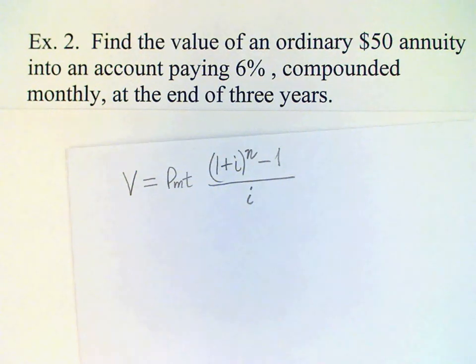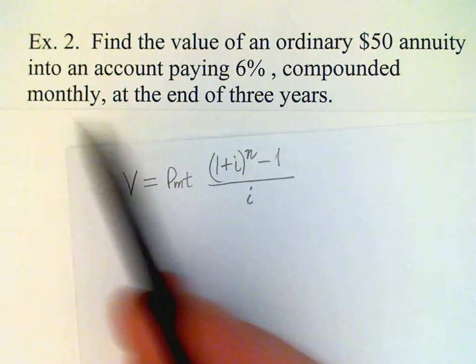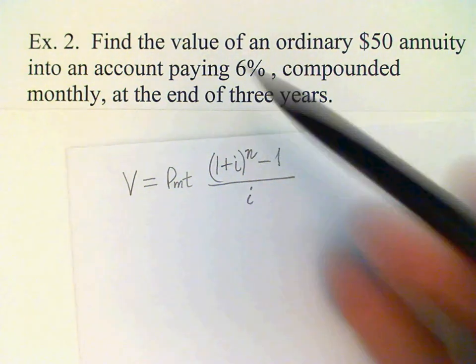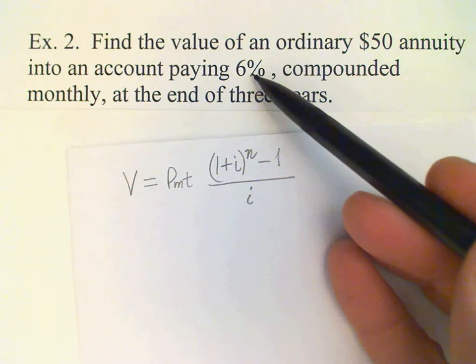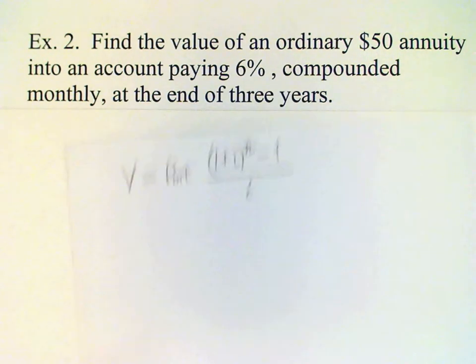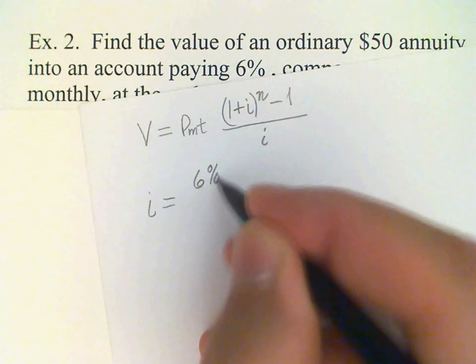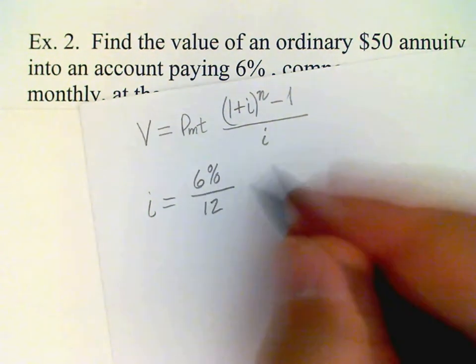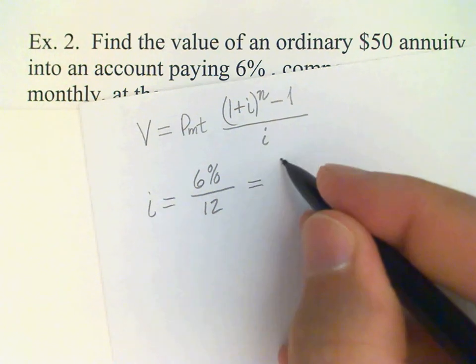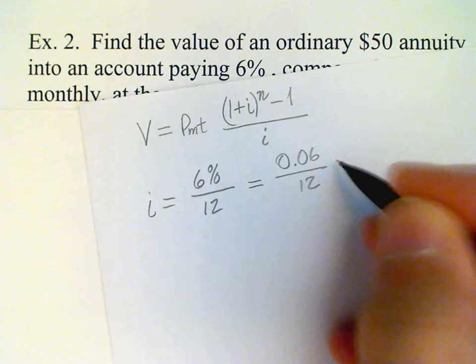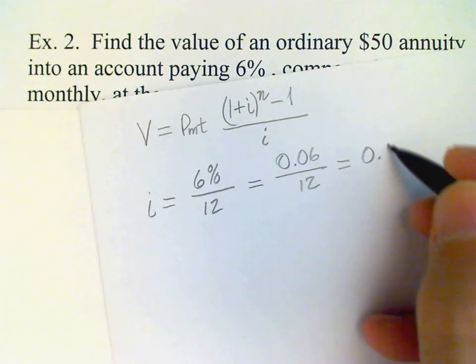So the problem says compounded monthly. That means that we'll need to divide our annual interest rate which is given in the problem, 6%, by 12. So I is equal to 6% divided by 12. Convert that percent to a decimal. We got 0.06 divided by 12. And so I is 0.005.